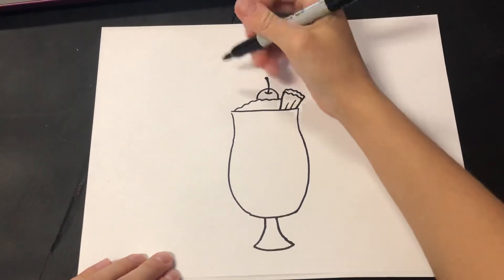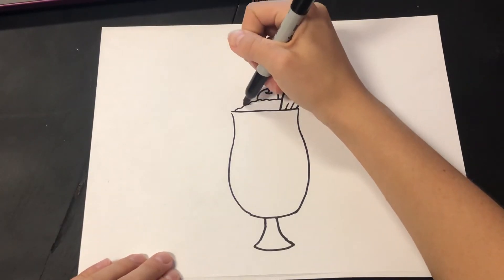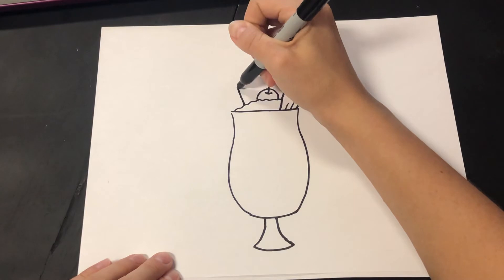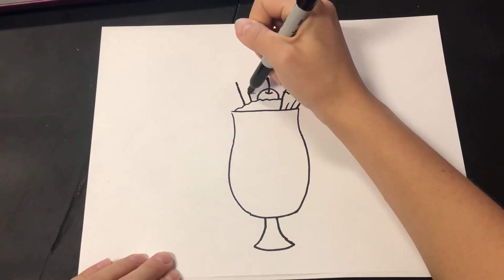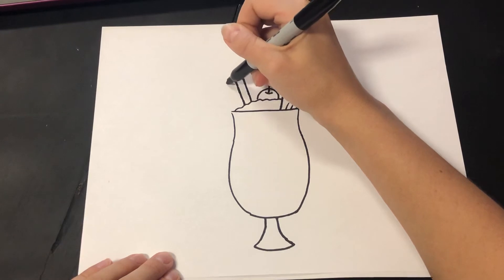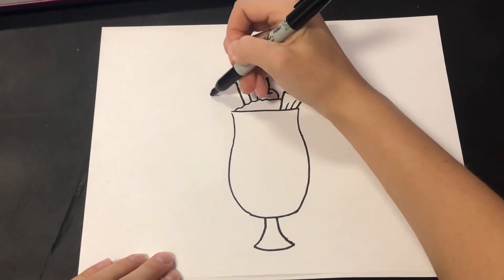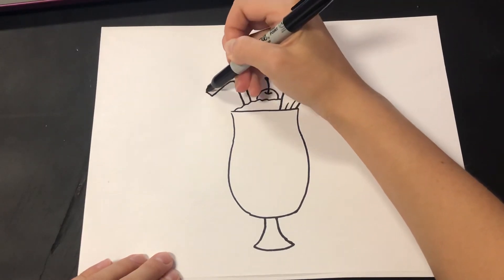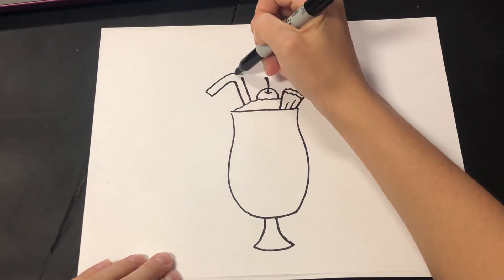And then drinks come with straws. So you can make this a metal straw if you want, but we'll do a classic bendy straw for this. We'll curve it that way. One small line up and curve it down.